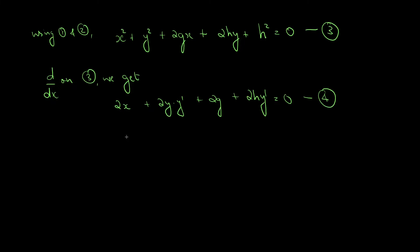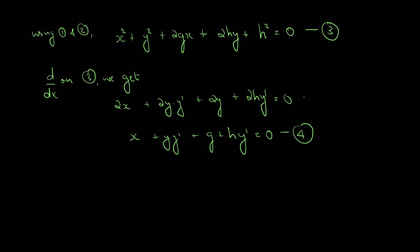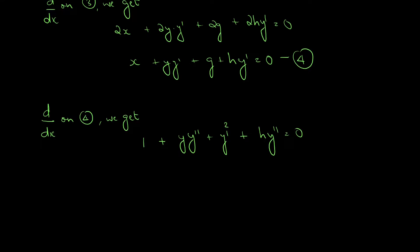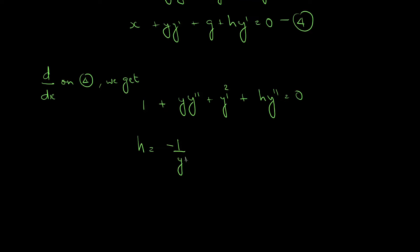Simplifying by cancelling 2, we get x + y·y′ + g + h·y′ = 0. This is equation 4. Differentiating equation 4 once more gives: 1 + y·y″ + (y′)² + h·y″ = 0. From this, we can write h = −(1/y″) × (1 + y·y″ + (y′)²). This is equation 5.